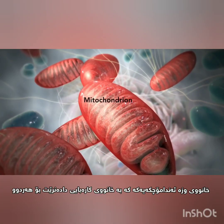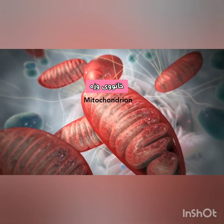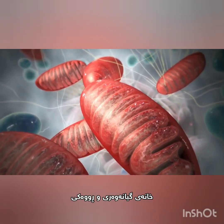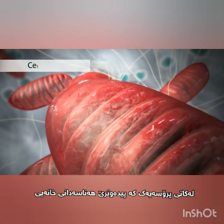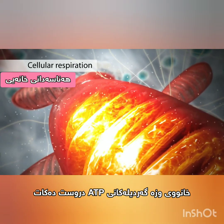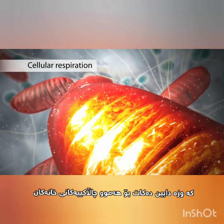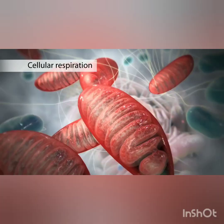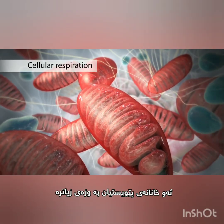The mitochondrion is an organelle that is the powerhouse for both animal and plant cells. During a process called cellular respiration, the mitochondria make ATP molecules that provide the energy for all of the cell's activities. Cells that need more energy have more mitochondria.